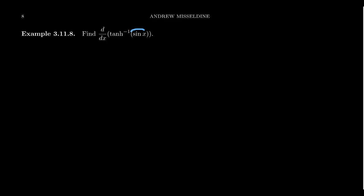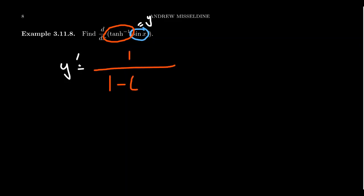So how do we calculate the derivative of a function involving a hyperbolic inverse? Just like we would any other function. For example, take the derivative of inverse hyperbolic tangent composed with sine. We see two functions in play: the inner function, which is sine of x, and the outer function, which is the inverse of hyperbolic tangent. By the chain rule, we calculate y prime by taking the outer derivative. The derivative of inverse hyperbolic tangent gives 1 over 1 minus something squared, where inside we put the inner function, sine of x. Then we multiply by the inner derivative, which is cosine of x.